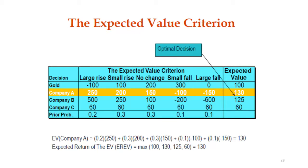In the previous lecture we discussed the expected value criteria, where probability is incorporated into the decision. The table and payoff are the same as the start of the lecture — four strategies and five states of nature. For the expected value criteria, we were given some probabilities in the last column.